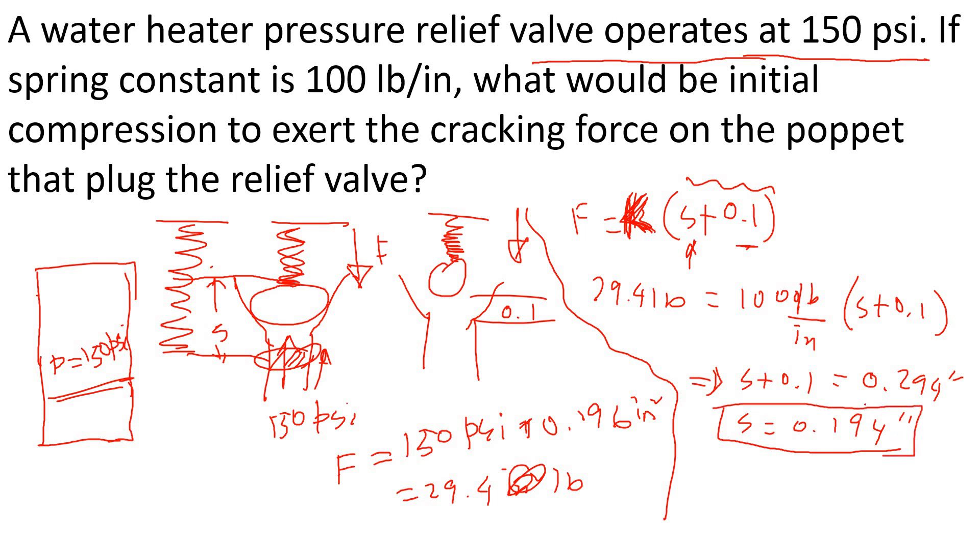That is the initial compression. It kind of changes if you look at this. 0.294 is the same number we calculated before. Now if we calculate the cracking pressure or cracking force, then the cracking force would be F equals K times S. K is 100 times 0.194, so that's going to be 19.4 pounds.